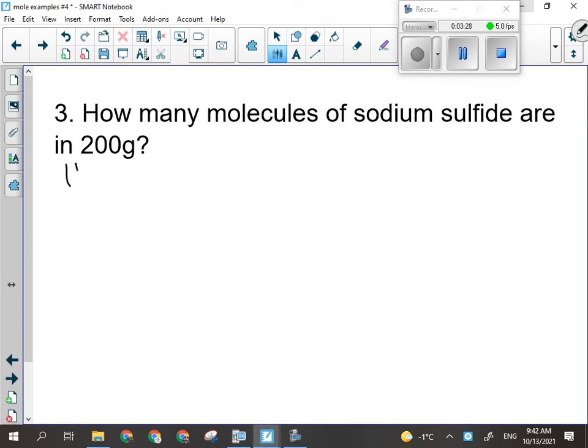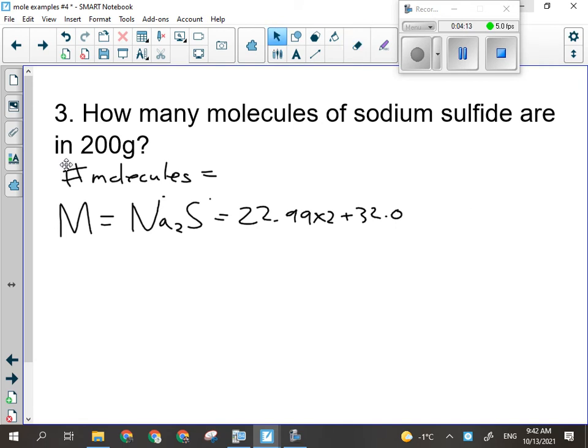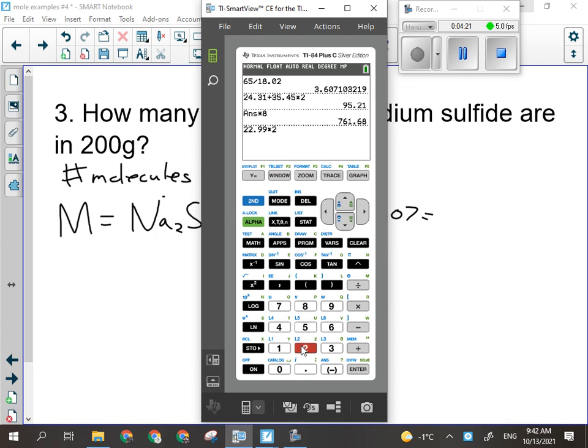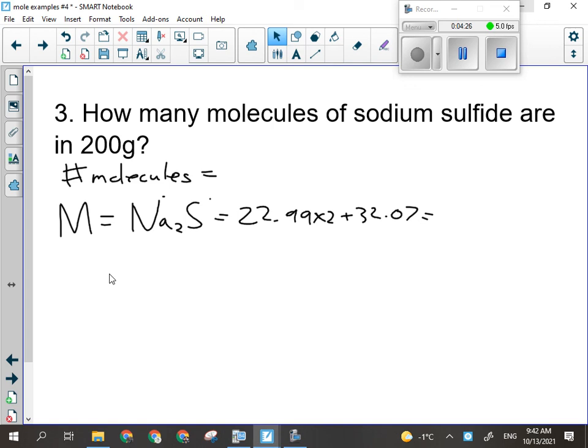Okay, so for number three we are looking for the number of molecules. If I'm going to get the number of molecules, I'm going to need the number of moles along with Avogadro's number. So we're looking for how many molecules of sodium sulfide. Na with S, minus two plus one, so we're looking at Na₂S. So that'll be 22.99 times 2 plus 32.06. 22.99 times 2 plus 32.07 is 78.05 grams per mole.